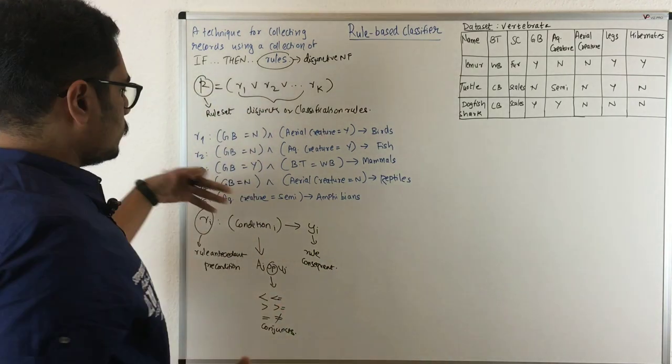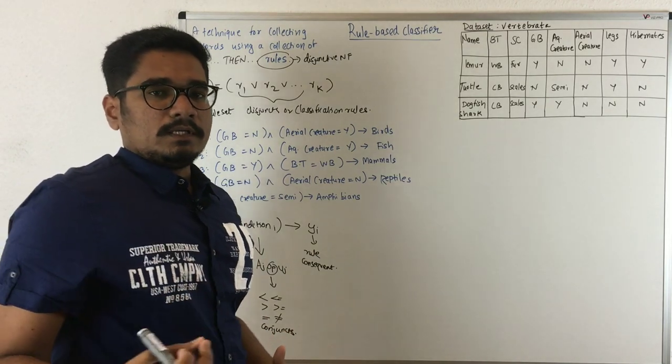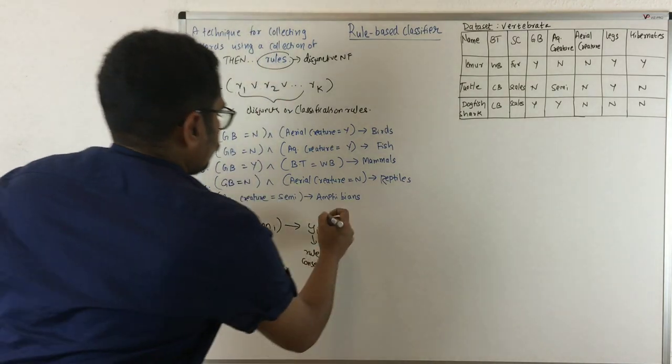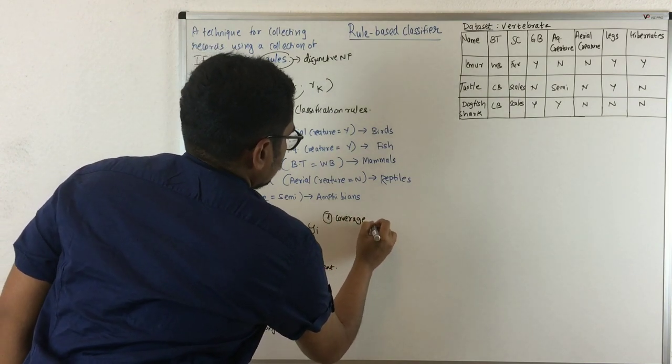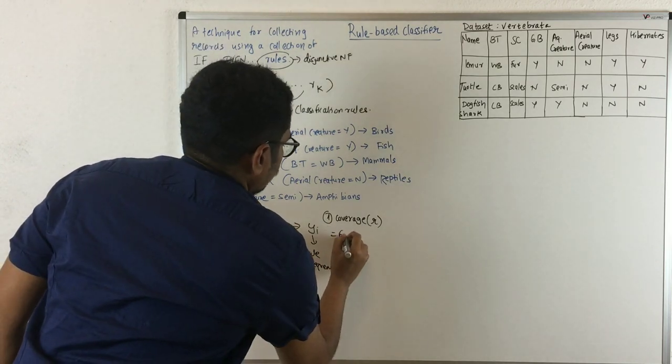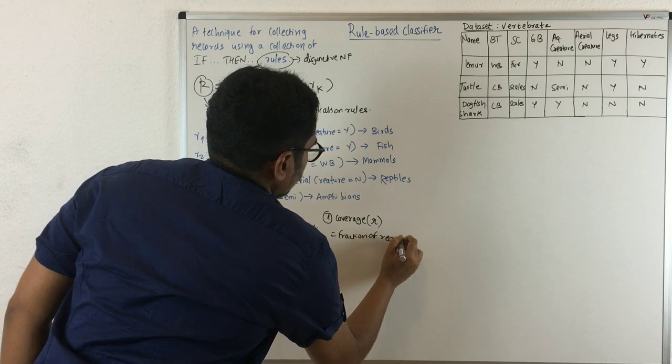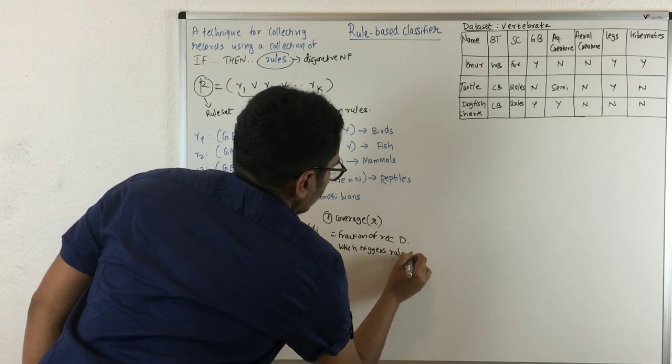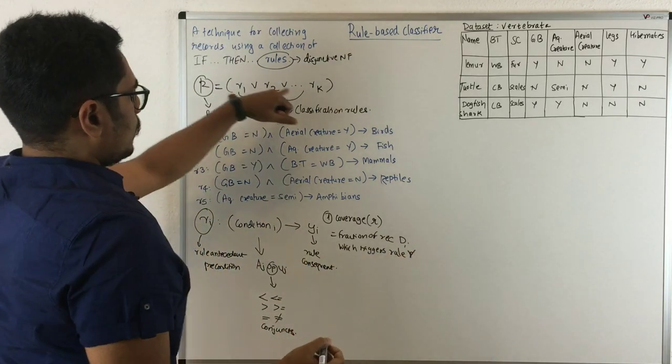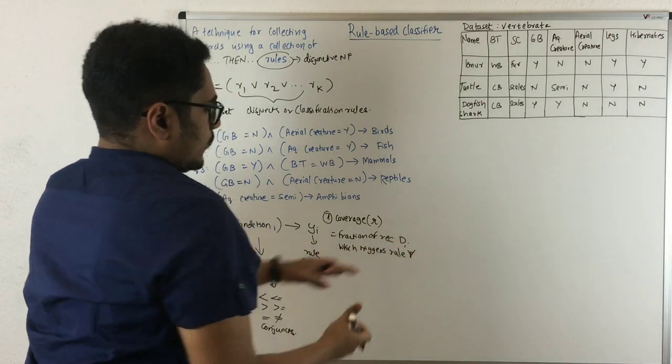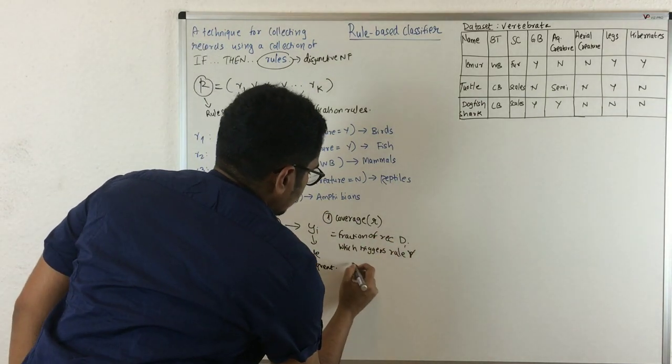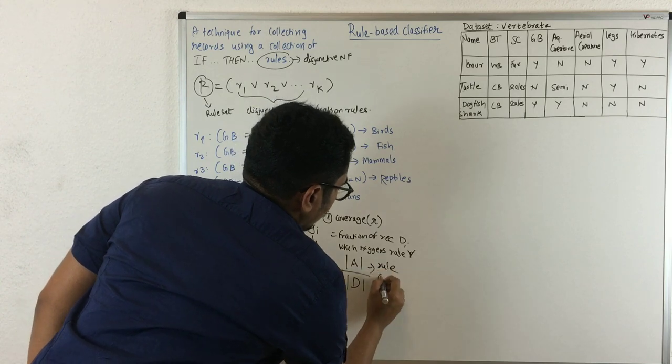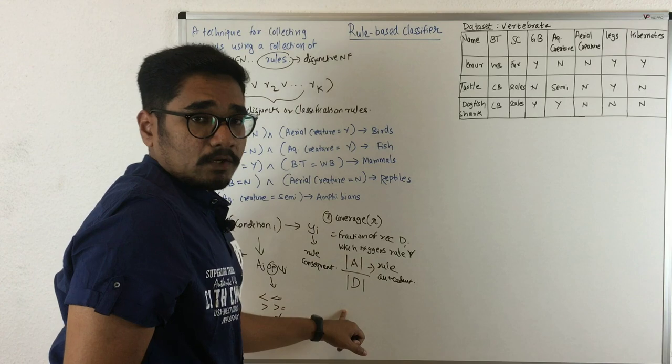We've seen the structure and syntax of how different rules are there in rule-based classifiers. In order to evaluate the quality of each rule, there are two measures. First, you have coverage. Coverage of a particular rule is the fraction of records in your dataset D which triggers your rule R. Mathematically, it is represented by |rule antecedent| divided by |D|, the number of records in the dataset.